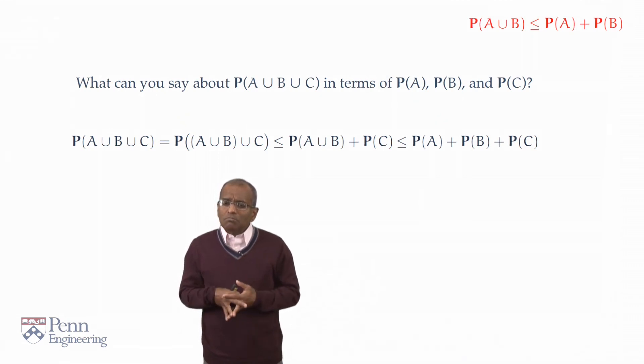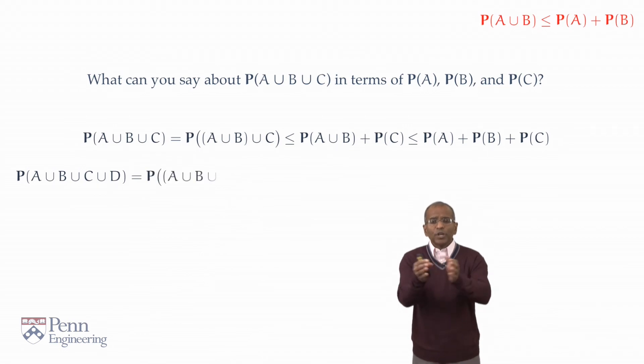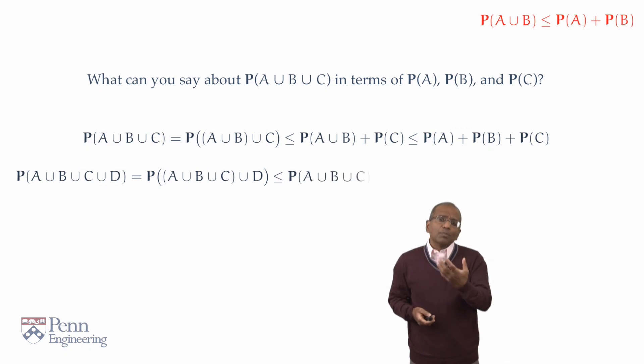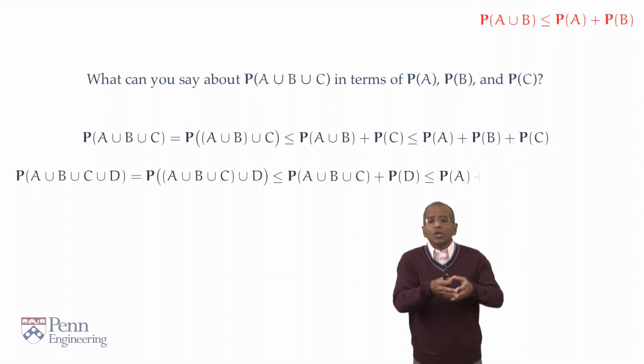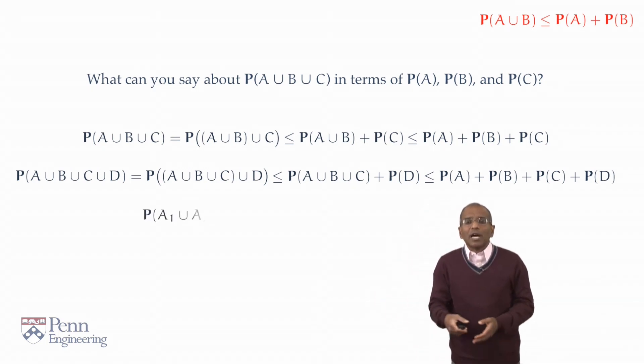What about four? Well, the argument unfolds in almost exactly the same way. Group three of them together into one unit. Take the union of that with the fourth unit. Use Boole's inequality. Write down a sum of two probabilities. And then, for the probability of the union of three elements, we already have discovered that this is no larger than the sum of three probabilities. And so, Bob's your uncle. There we go. And of course, now we see an inductive process at work. And without further ado, we can write down the general formula.